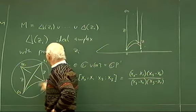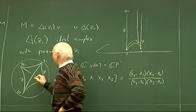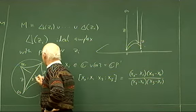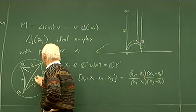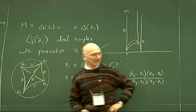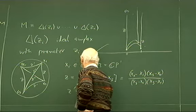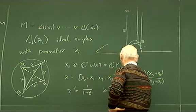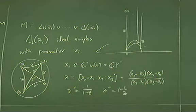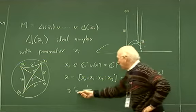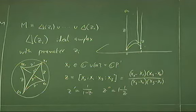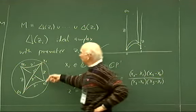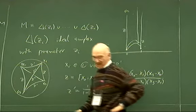Opposite sides have the same parameter. Then you have Z′ and Z″ on opposite sides, where Z′ = 1/(1−Z) and Z″ = 1 − 1/Z. There's a little flexibility in the choice of parameter, but we simply choose some ordering of the vertices and then have these parameters.